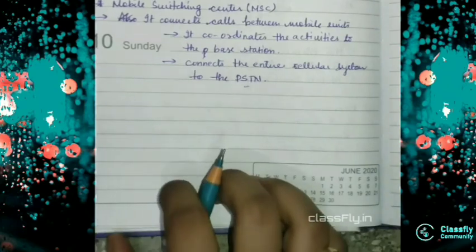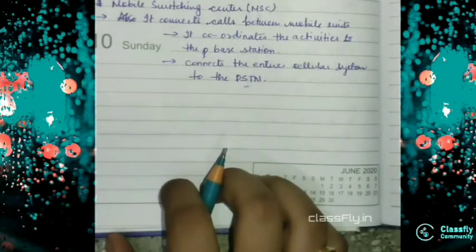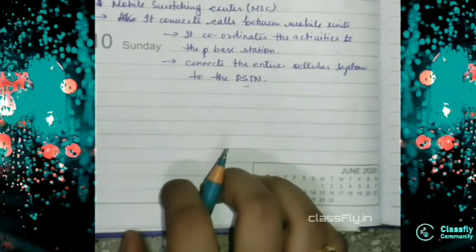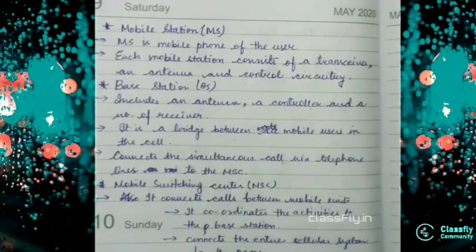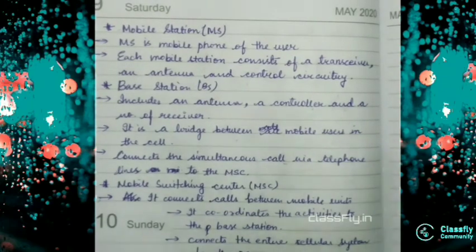PSTN we know that it is public switch telephone. The PSTN work is that it basically turns the human voice that I am saying so that the other person can receive the same content whatever I am saying. That means it works on the basis that the human voice must be recognizable to the person to whom he or she is speaking.